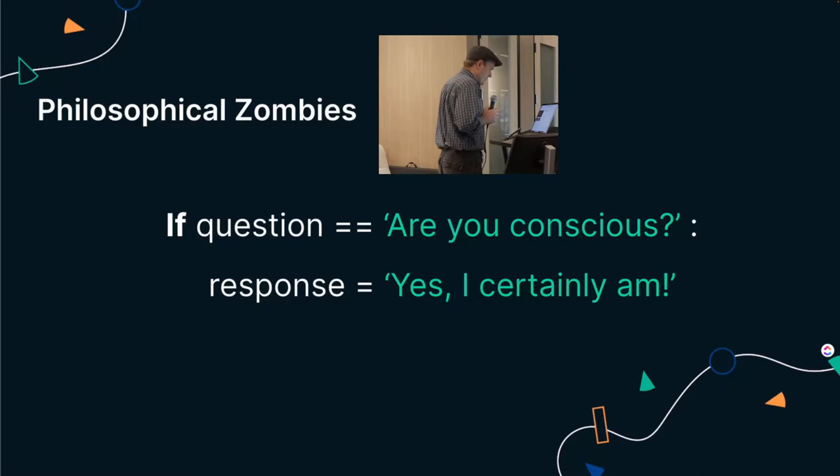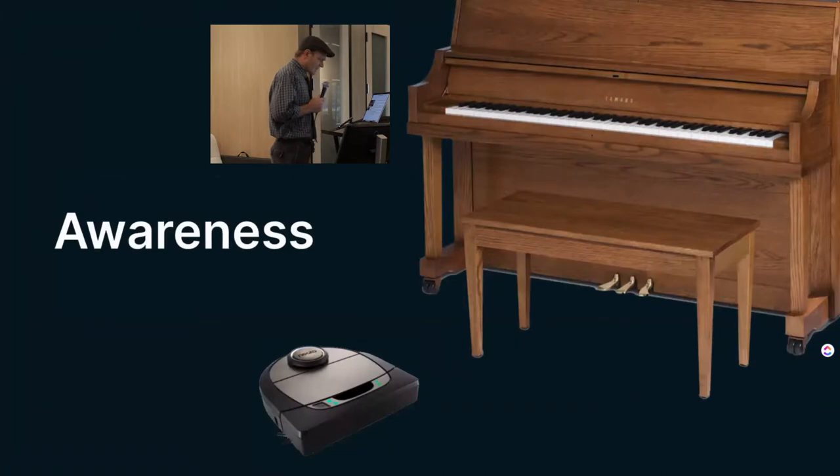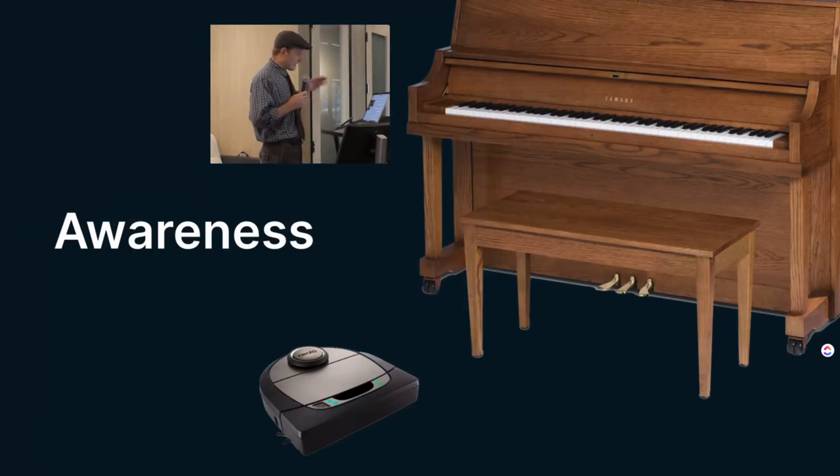However, if we build machines, we can make them with varying levels of complexity. For example, I happen to have a certain vacuum, which is definitely not conscious. But this vacuum exhibits a property which is an important part of consciousness called awareness. The reason I know my vacuum has awareness is it has sensors and it doesn't bump into my piano. That's what awareness is. Awareness is when you can operate with an understanding of the environment around you.